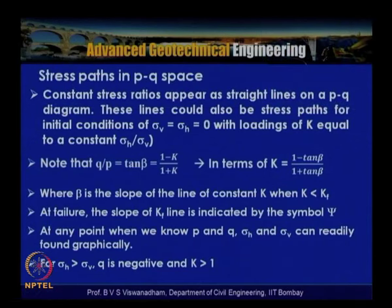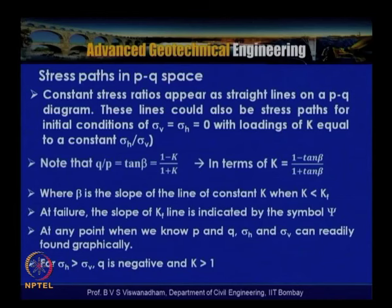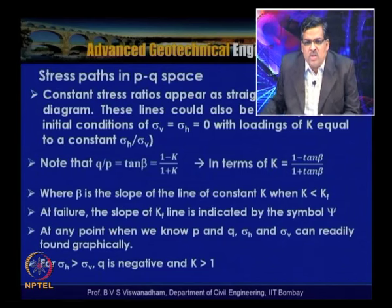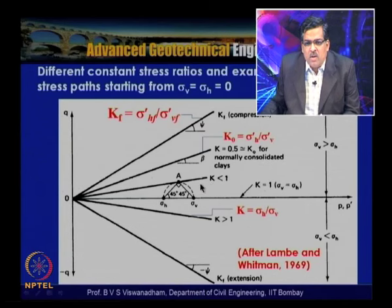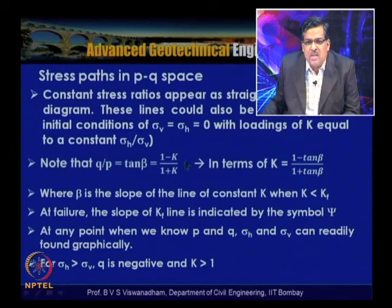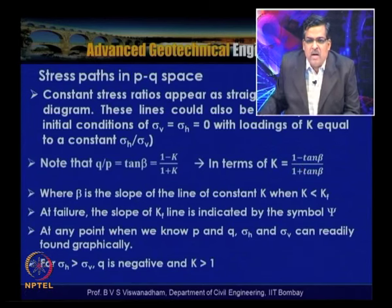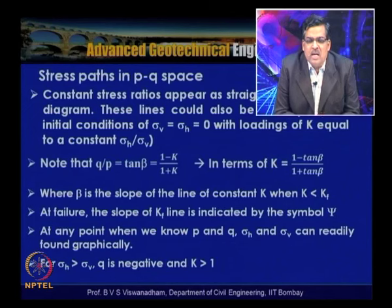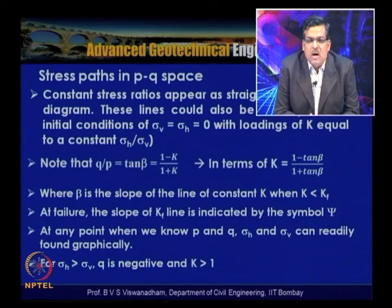Constant stress ratios appear as straight lines on a PQ diagram. The ratio q/p = tan β = (1 − K)/(1 + K), and conversely K = (1 − tan β)/(1 + tan β), where β is the slope of the constant-K line. The Kf failure line is indicated by angle ψ in compression or extension.